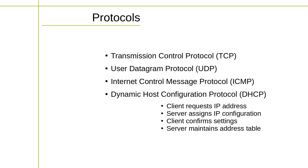In a home or small business network, the router or DHCP server is usually configured to automatically assign IP addresses to devices on the network. This eliminates the need for manual IP address configuration and makes it easy for devices to connect to the network.